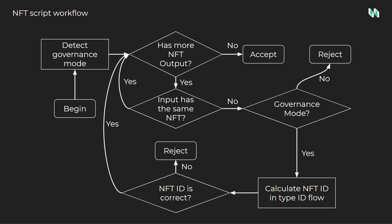Let's look at the workflow of the NFT script. Starting on the left side, the NFT script detects if governance mode is active and stores the result in a variable. Next, a loop checks if there are more NFTs to be processed in the output cells. If the same NFT exists in the inputs, it indicates transfer behavior — no further validation is needed. If it does not exist in the inputs and governance mode is not enabled, the operation is rejected because only the owner can create new NFTs. If governance mode is enabled, the NFT ID is calculated using the seed cell pattern similar to the type ID TypeScript — if the NFT ID hash doesn't match the seed cell, the operation is rejected, ensuring NFT cells can only be created in the expected way.